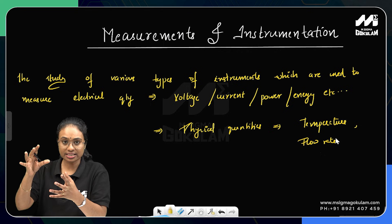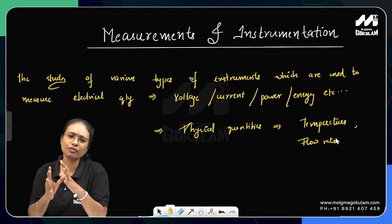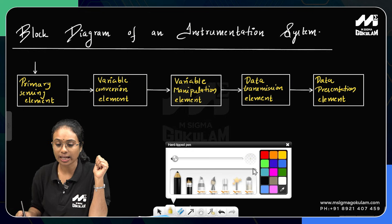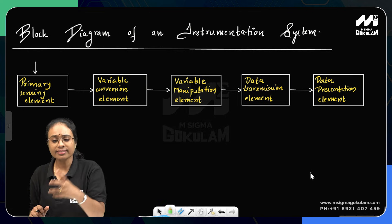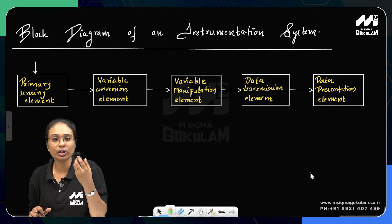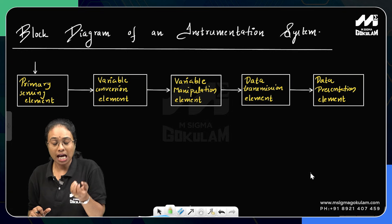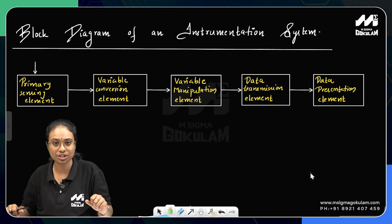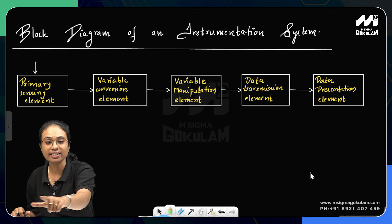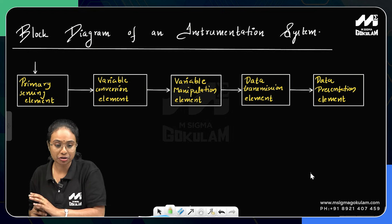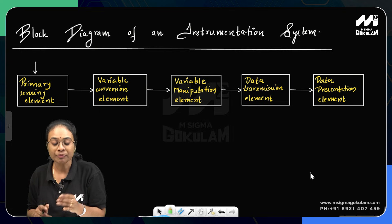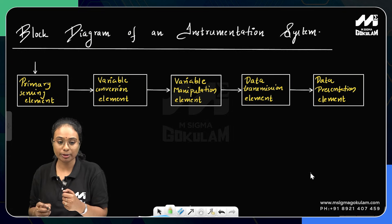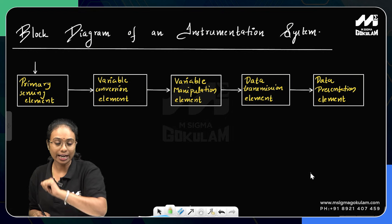Now, going in depth, we look at the block diagram of an instrumentation system. The blocks are: primary sensing element, variable conversion element, variable manipulation element, data transmission element, and data presentation element. These blocks together form the main instrumentation system.